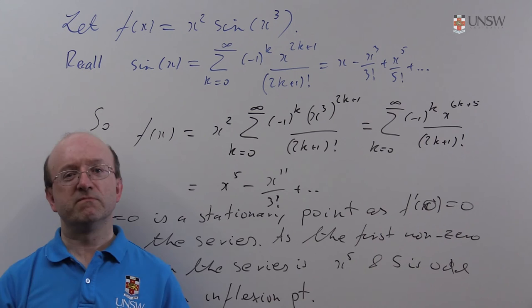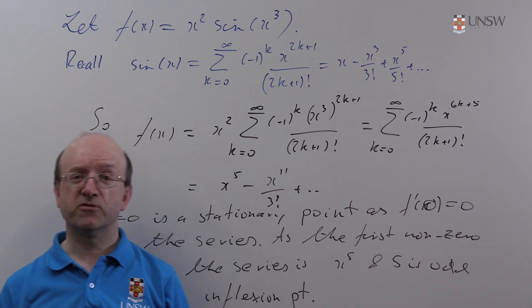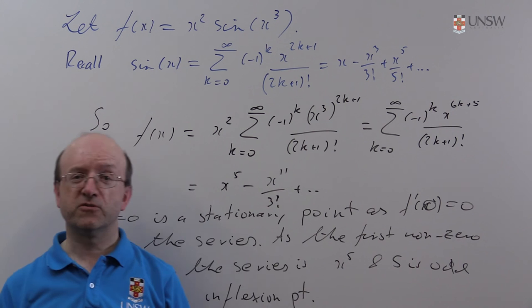In fact, we could have told ourselves that before we did any calculus at all really. This is an odd function. Sine is an odd function, sine of x³ must be odd, multiplied by x² just leaves us as odd. And you've got an odd function with a turning point at zero, it could be an inflection point, it can't be anything else.